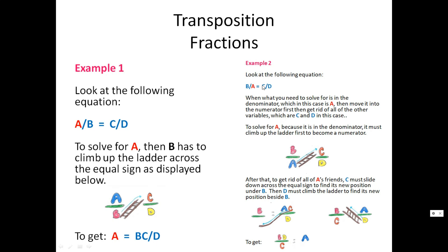Here's example number two — I made it smaller script so everything could fit on the page and so you can compare what we're doing. Now we want to solve for a, which is now in the denominator. In the first example, a was the numerator; now in the second one, a is the denominator. We have b over a equals to c over d. When what you need to solve for is in the denominator — which in this case is a — then move it into the numerator first.